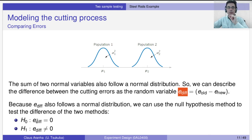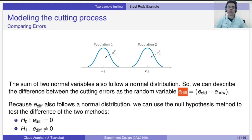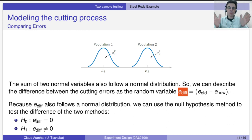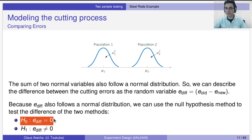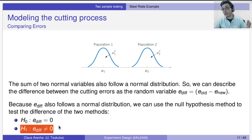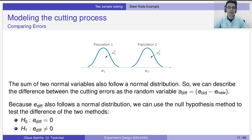Because e_diff also follows a normal distribution, we can do exactly the same thing as last class: a null hypothesis versus alternate hypothesis test on this difference of errors. The null hypothesis is that both methods are identical — the simplest thing is that the new method is not very different from the old one — so the difference between the means is zero. In the alternate hypothesis, the two methods are actually different, so the difference between the means is not zero.